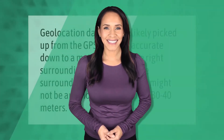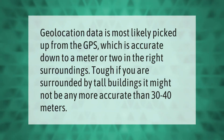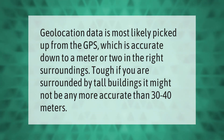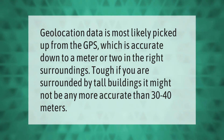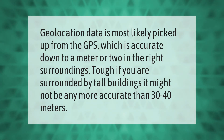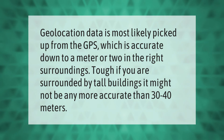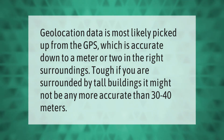You have to actively disable location services and edit the file's metadata to stop sharing your location. Geolocation data is most likely picked up from the GPS, which is accurate down to a meter or two in the right surroundings. However, if you are surrounded by tall buildings, it might not be any more accurate than 30 to 40 meters.